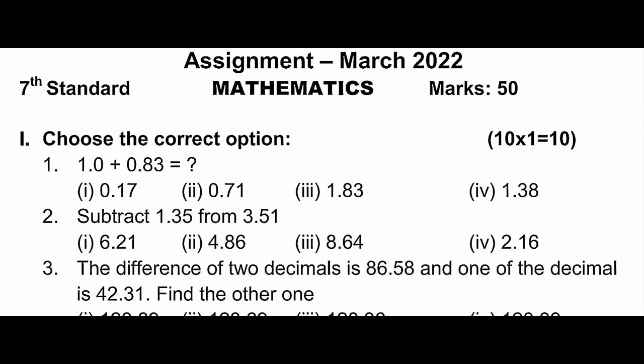Choose the correct options. First one: 1.0 plus 0.83 is equal to? So 1.0 plus 0.83 — the decimal parts: 1 plus 0 is 1, and 83 plus 0 is 83, so the answer is 1.83. The third option, 1.83, is correct.